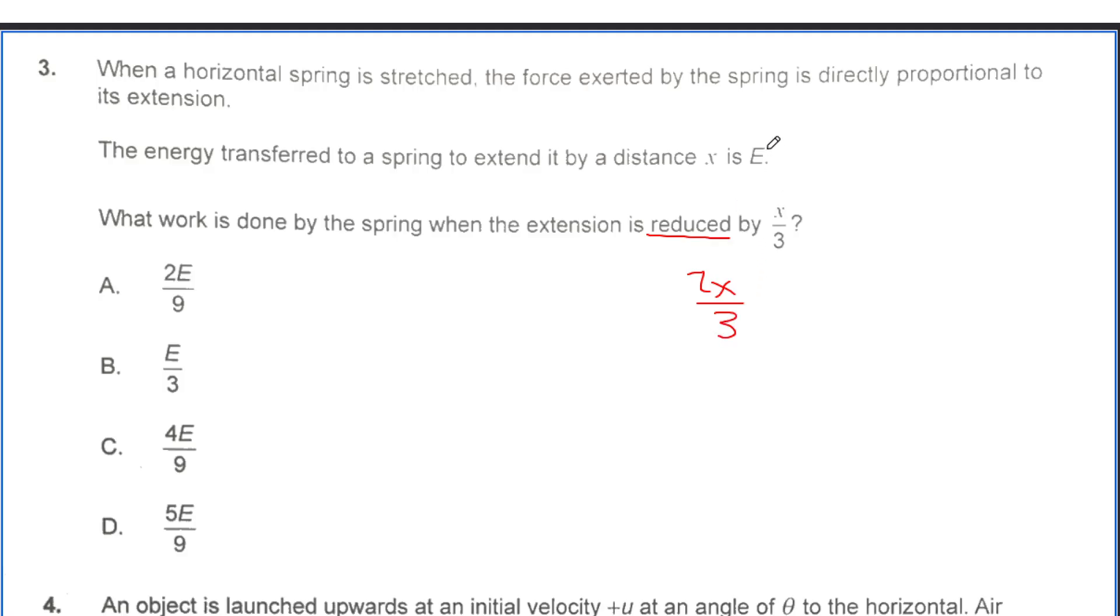And then we have a formula in our data booklet that in a spring, our energy is going to equal 1 half k x squared. So we can plug that in for this new case. And we're going to have E prime equal to 1 half k times 2x over 3 squared.